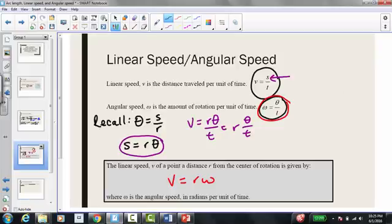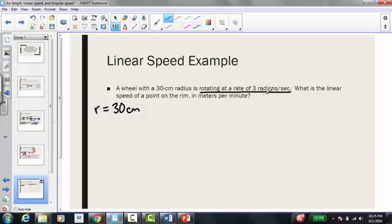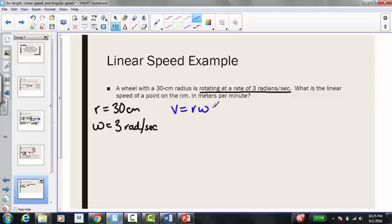Then we're given rotating at a rate of 3 radians per second. Well, looking back on the previous slide, we have omega is the amount of rotation per unit of time, which is exactly what this is saying. So this is giving us omega equals 3 radians per second. Using the equation that we just came up with, v, which is our linear speed, equals our radius times our omega, which is our angular speed. We get v equals 30 centimeters times 3 radians per second.